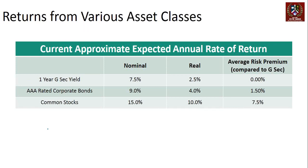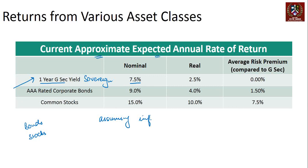We've already seen broadly there are two major asset classes: bonds and stocks. Within bonds we could have G-Secs, which are government securities — sovereign bonds. Currently, the approximate expected annual rate of return for the one-year G-Sec in India is about seven and a half percent. We are assuming inflation is at approximately five percent, so seven and a half minus five percent gives two and a half percent real return on the one-year G-Sec yield. There is no risk premium compared to itself.